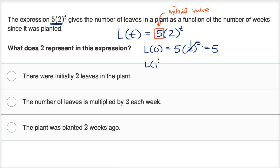What is L of one? What happens after one week? Well, that's gonna be five times two to the first power, or five times two. So going from when it was planted to the first week, we are multiplying by two, the number of leaves doubles.